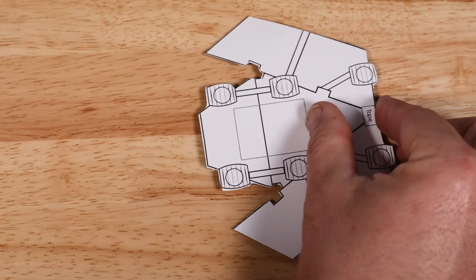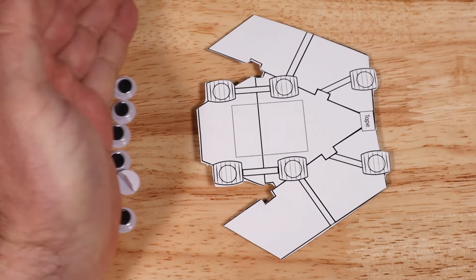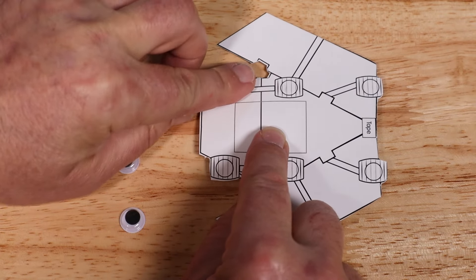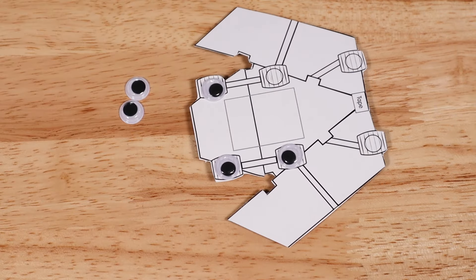Flip it over and get six self-adhesive googly eyes. Remove the backer and place them as feet on the bottom of the rover.